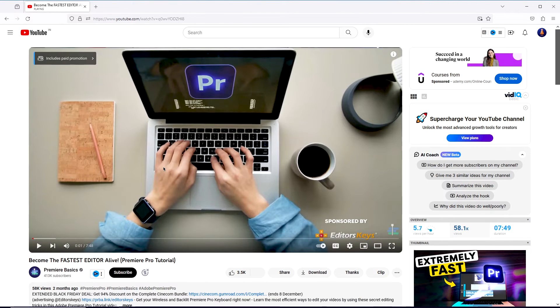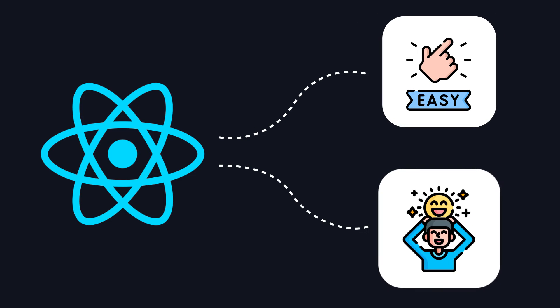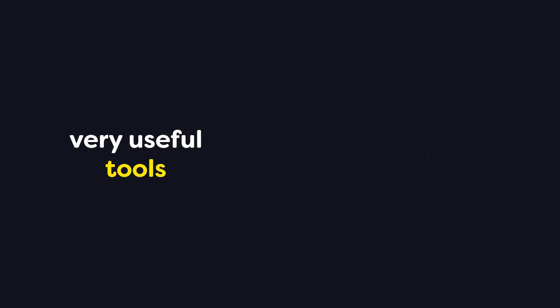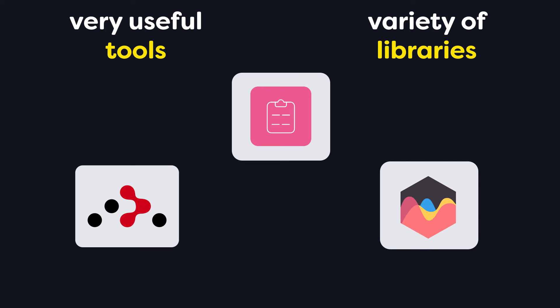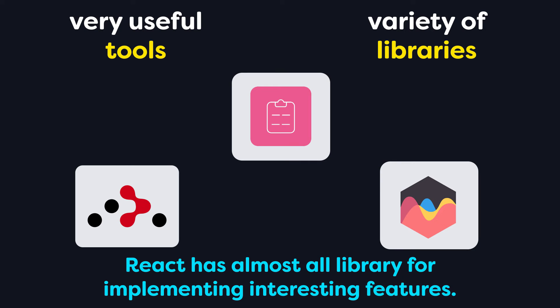Another reason for React's dominance is its developer experience. React focuses on the ease and joy of coding. Many developers love to create applications in React because it has so many useful tools and a variety of libraries for advanced features like routing, form validation, charts, and much more. Basically, React has almost every library for implementing interesting features. And since React is so popular, there are many developers who can help you solve problems — you can easily find online solutions on Stack Overflow and Quora.